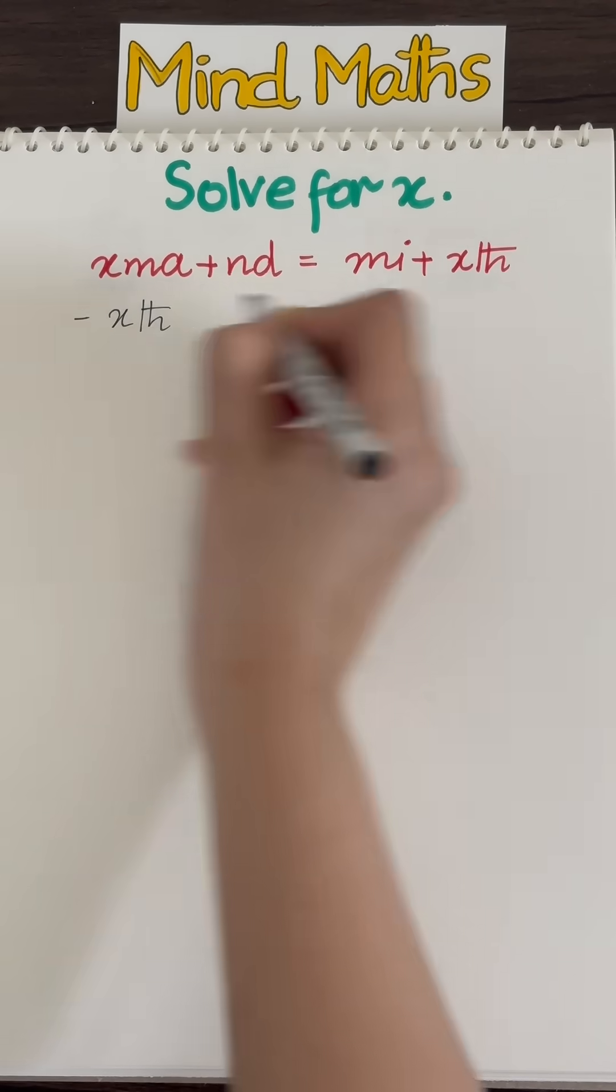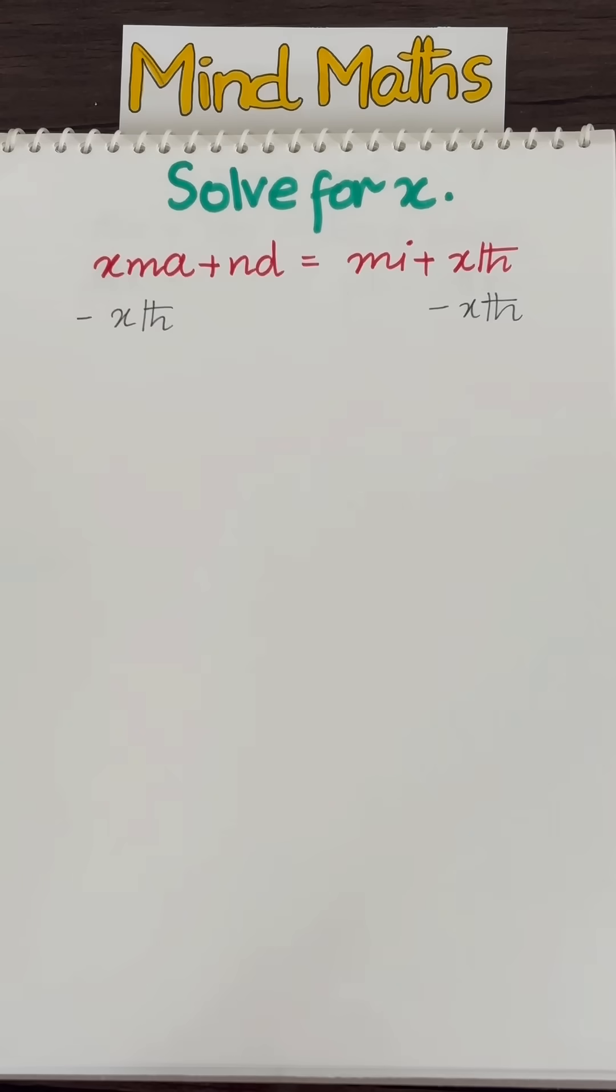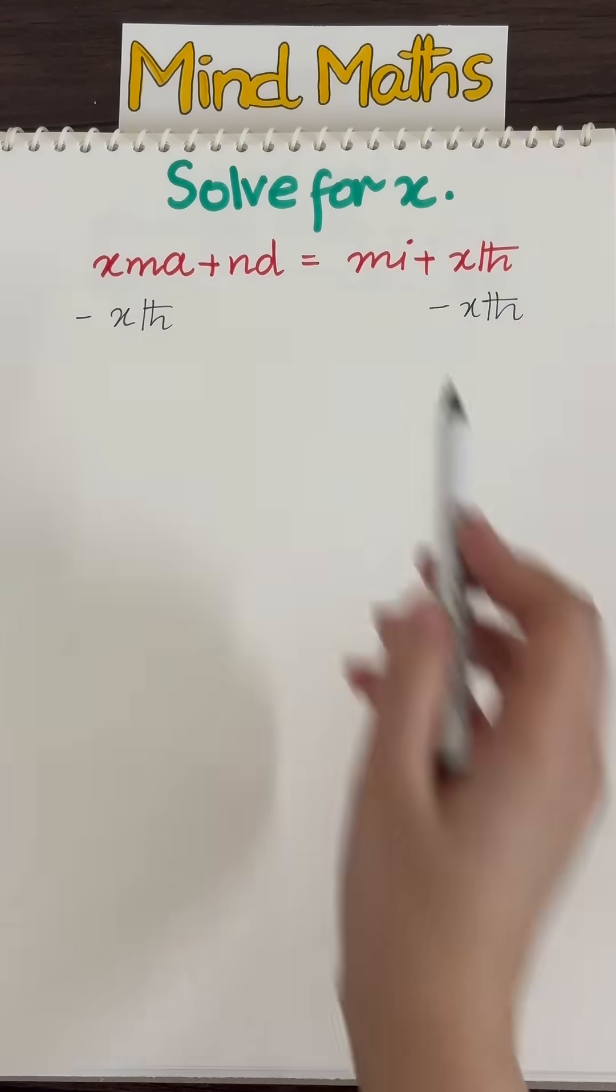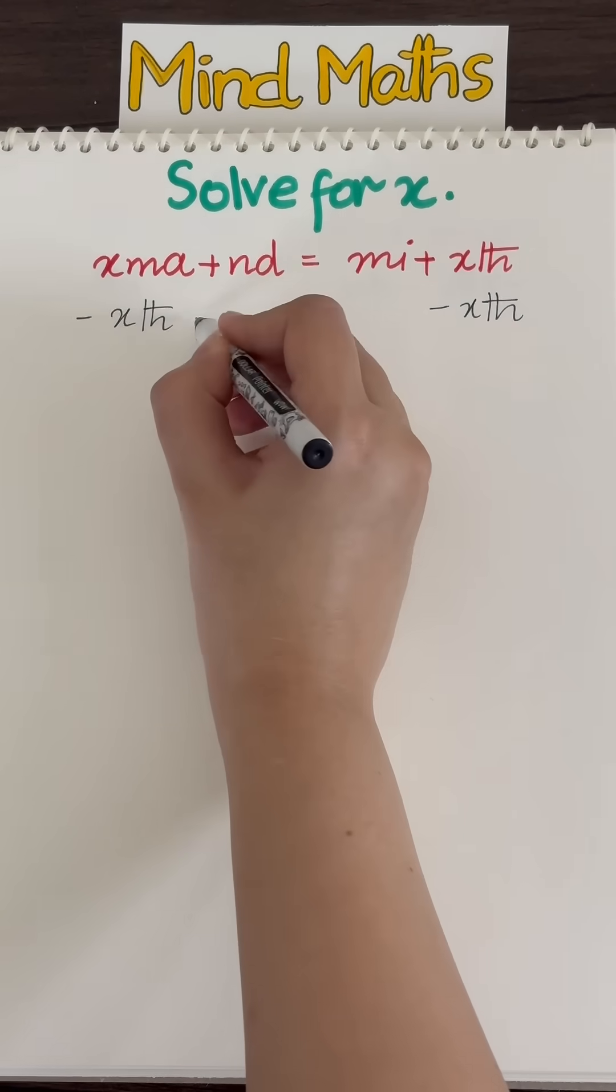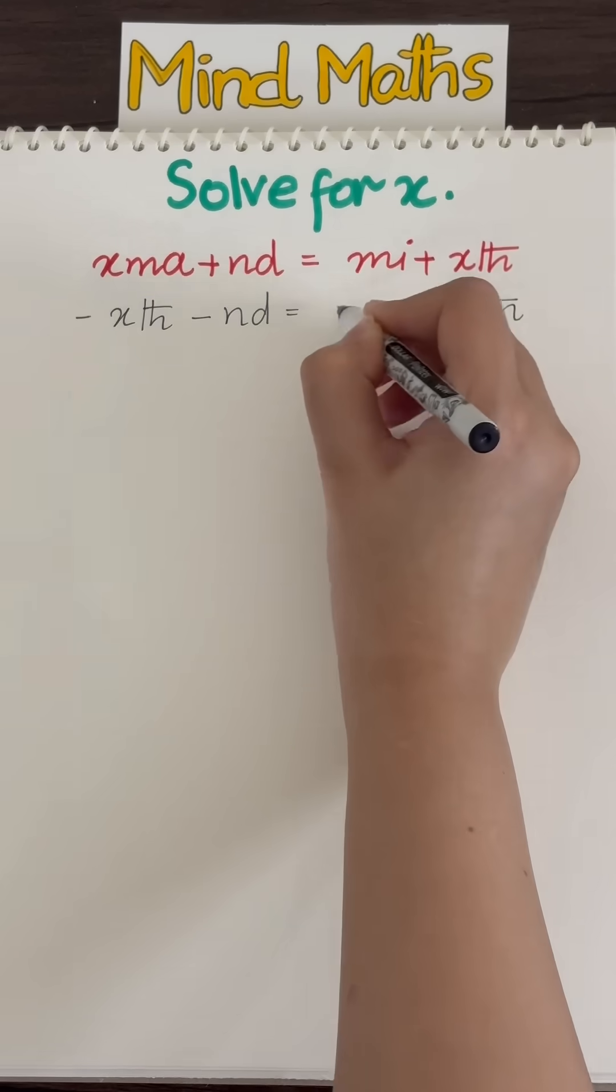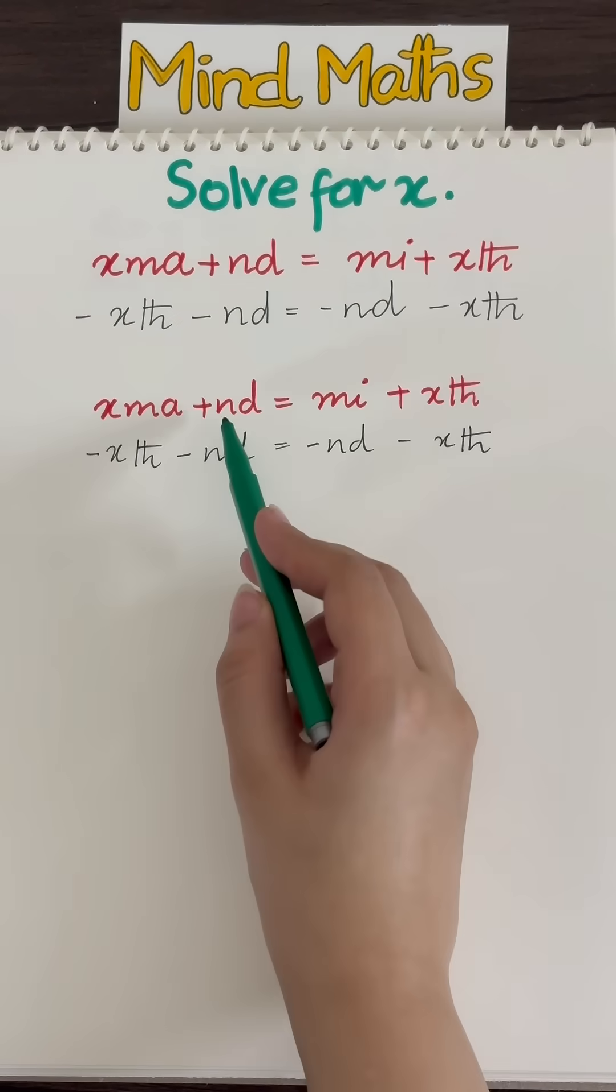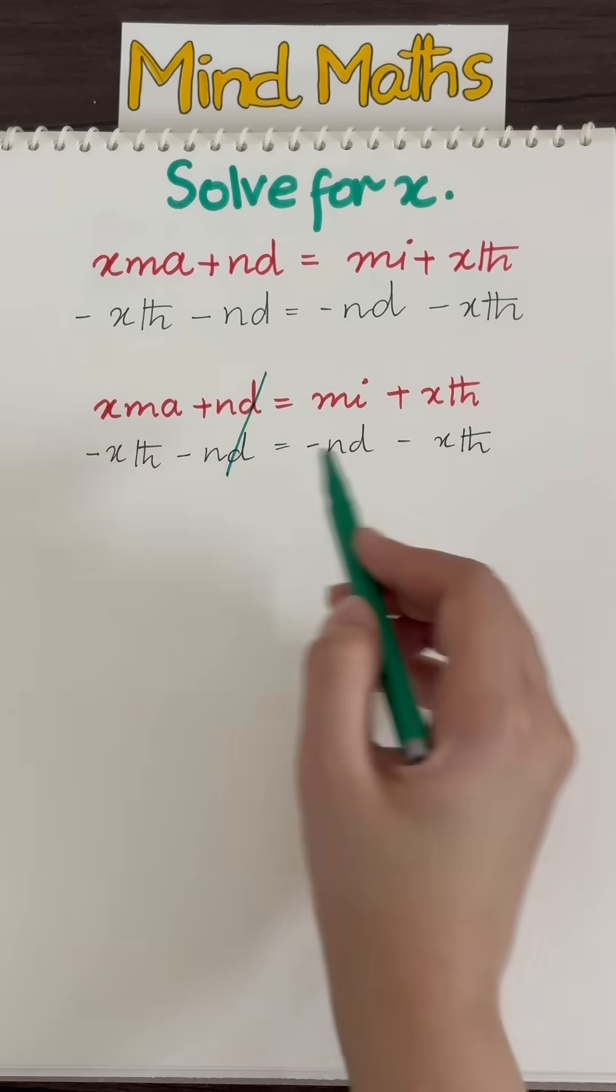So I'm going to subtract XTH from both sides. And then, while we're at it, this ND does not have an X, so we want to move it to the other side. We can do that by subtracting ND from both sides.